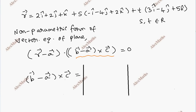Setting up the determinant: first row is i, j, k; second row is b minus a, which is (-1, -4, 2); third row is c vector (-3, 4, -5).